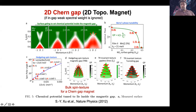To be absolutely sure, we gated the sample to create an insulating magnetic state — putting the Fermi level within the gap — and tracked Berry phase tunability, how the Berry phase is collapsing. We used NO2 for surface gating and demonstrated that this hedgehog spin texture is really the signature of a Chern gap.